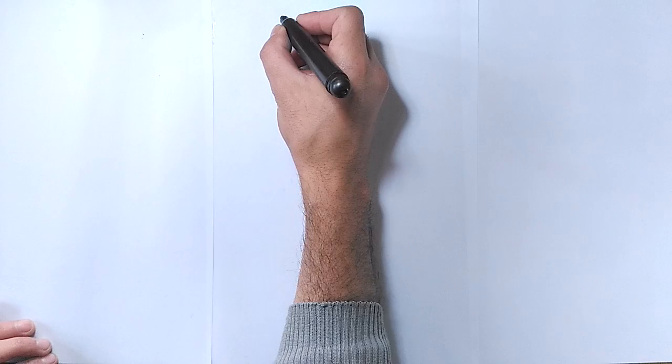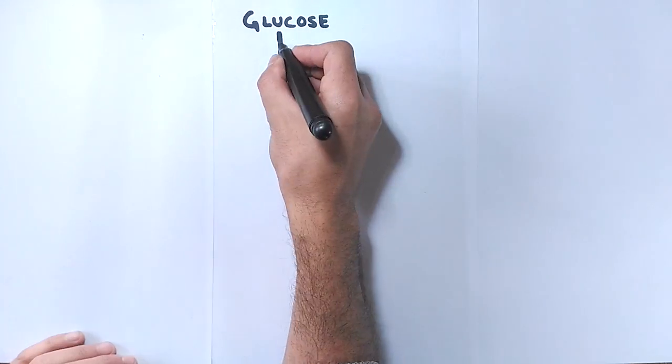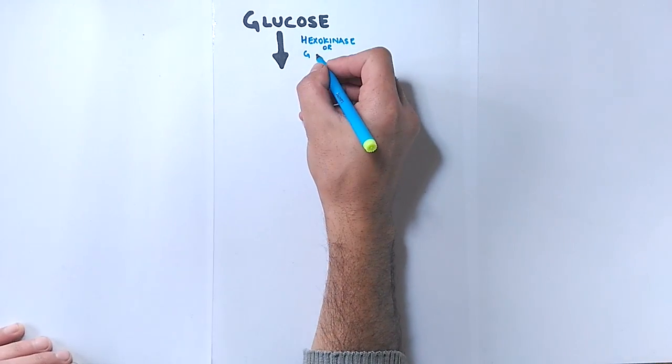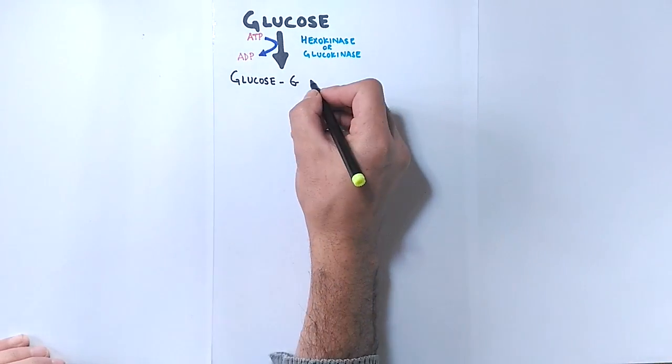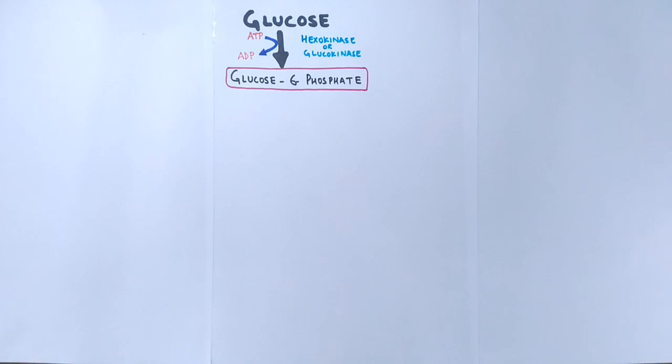To start glycolysis we have a glucose molecule wherein by the help of hexokinase or glucokinase enzyme and the energy from ATP, the glucose gets converted into glucose 6-phosphate. In this reaction phosphorylation of glucose occurs by hexokinase enzyme.